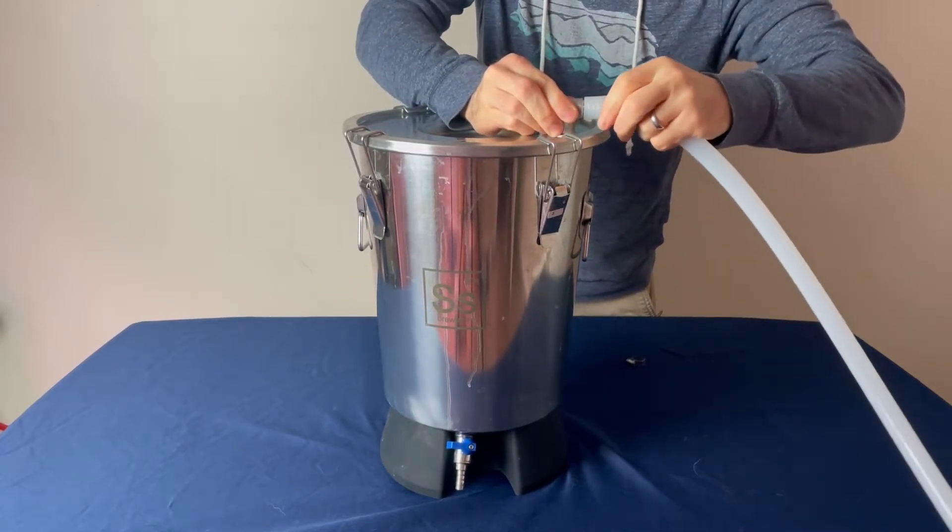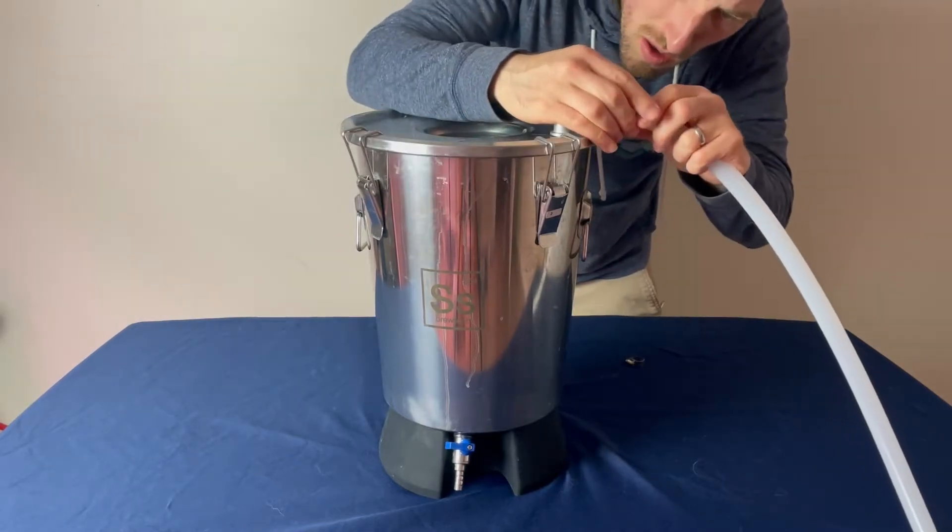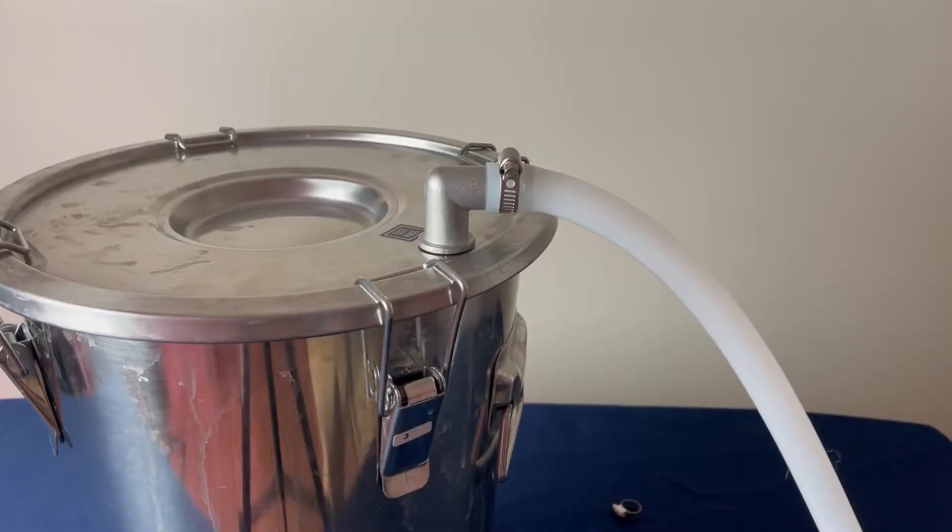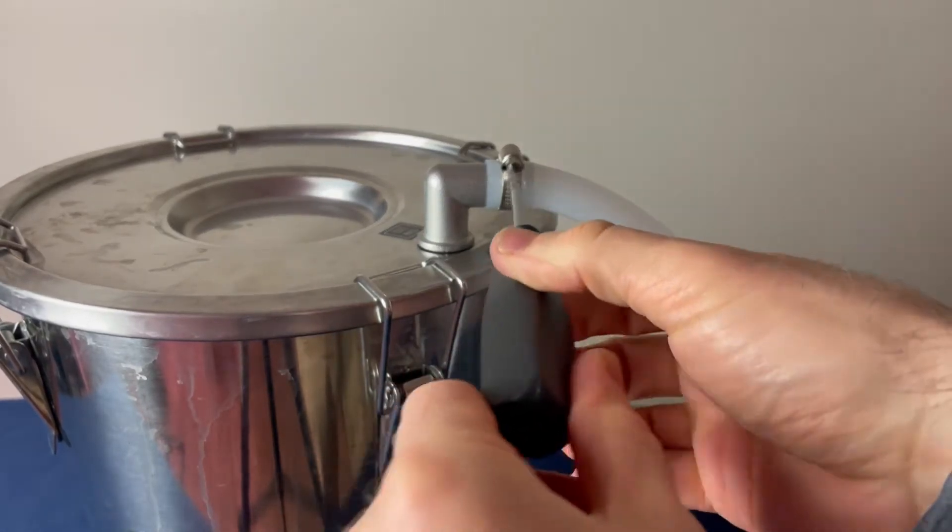Next, we'll grab the half-inch tubing, putting that over the barb, and then taking with that a small hose clamp that fits over it, and with a screwdriver, we'll tighten that down until it's fully installed.